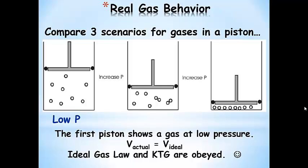Let's look at three scenarios for gases in a piston, so we can increase the pressure easily. In the first scenario at low pressure, we just have a gas comfortably in the container. Under these circumstances, the actual volume taken up by the gas is what we would get if we use the ideal gas law to calculate it. So in a low pressure scenario, the ideal gas law and the kinetic theory of gases are obeyed.